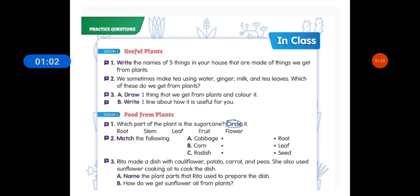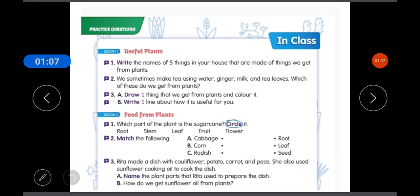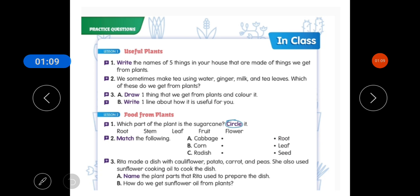Second question is we sometimes make tea using water, ginger, milk and tea leaves. Which of these do we get from plants? So we get water, ginger, milk and tea leaves. Yes we get ginger and tea leaves from plants.